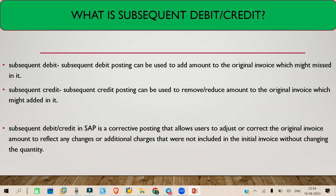So what is the subsequent credit? It is the opposite of subsequent debit. Let's say your vendor has overcharged you — the price was ten rupees per piece but your vendor sent you an invoice for twelve rupees. In that case, you want to reduce the two extra rupees. The original document has been posted with the extra amount, so you create one more document called a subsequent credit memo, or subsequent credit document, to reduce that amount from the original invoice.